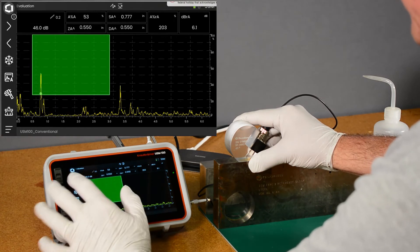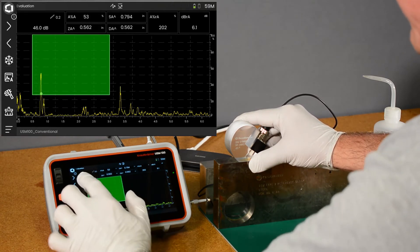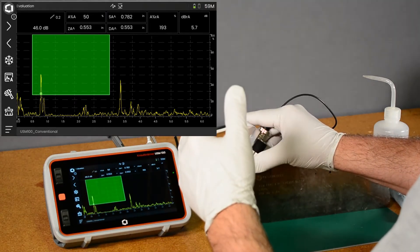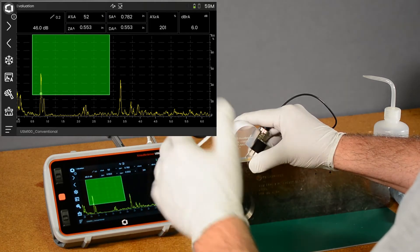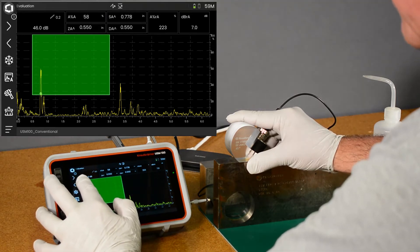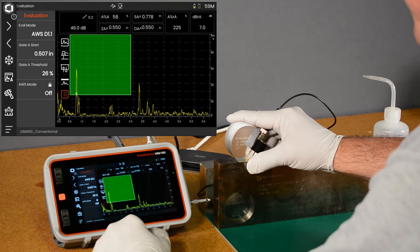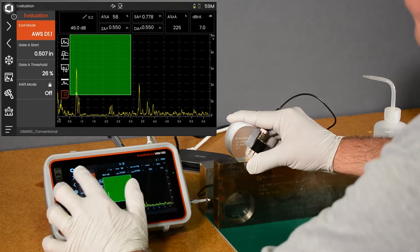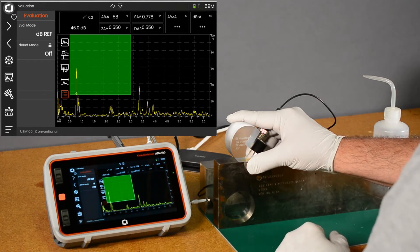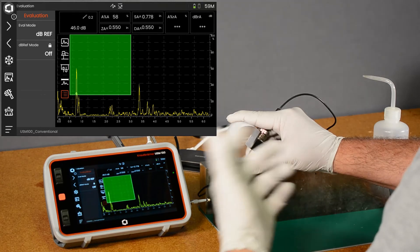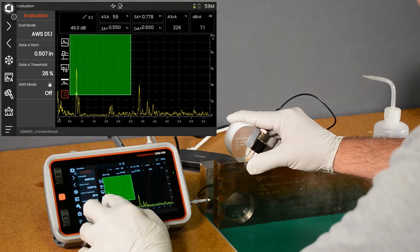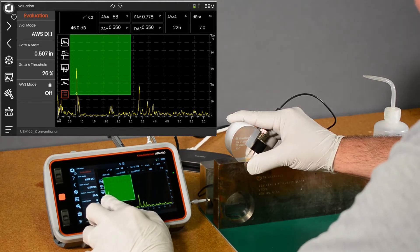Let's close our gain menu. We are already on our evaluation panel. We've previously set the delay, velocity and angle. Let's open the evaluation menu. Here we see it's already selected AWS D1.1. By default that's going to be dB ref when you're going through your app from the beginning, so we're going to select AWS D1.1.